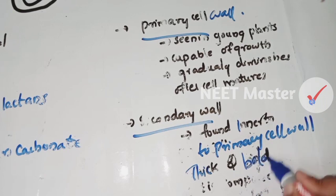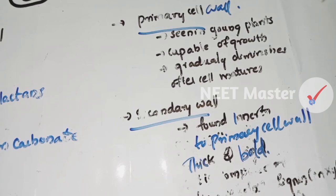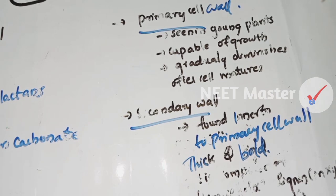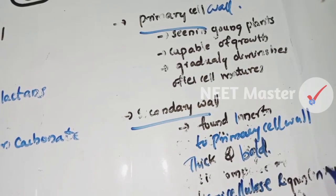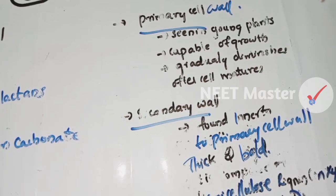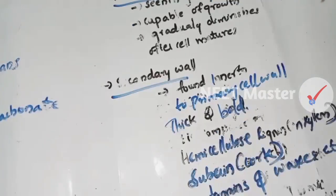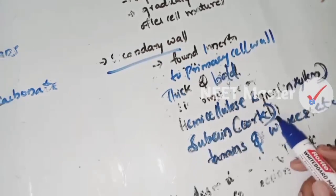The secondary cell wall is found inner to the primary cell wall. It is thick and bold. It is composed of hemicellulose, lignin, suberin, tannins, and waxes.